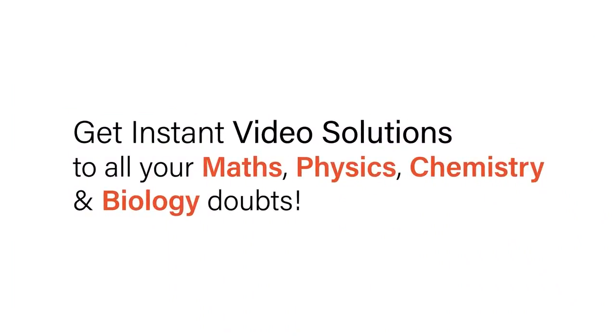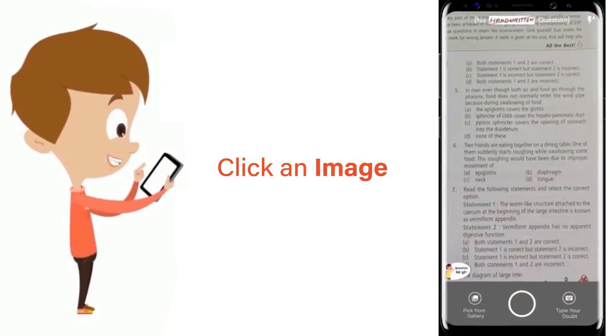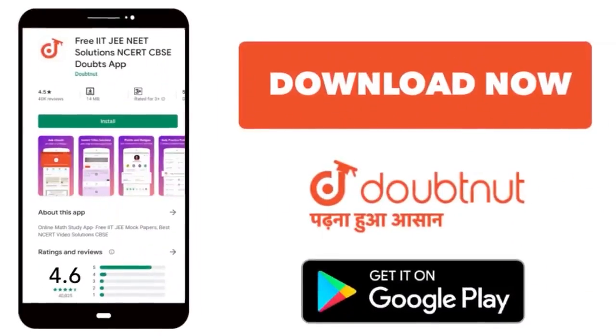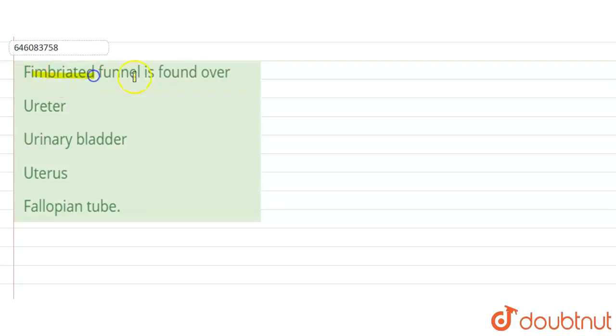With DoubtNet, get instant video solutions to all your maths, physics, chemistry, and biology doubts. Just click the image of the question, crop the question, and get instant video solution. Download DoubtNet app today. The question is: fimbriated funnel is found over. The options are ureter, urinary bladder, uterus, or fallopian tube.